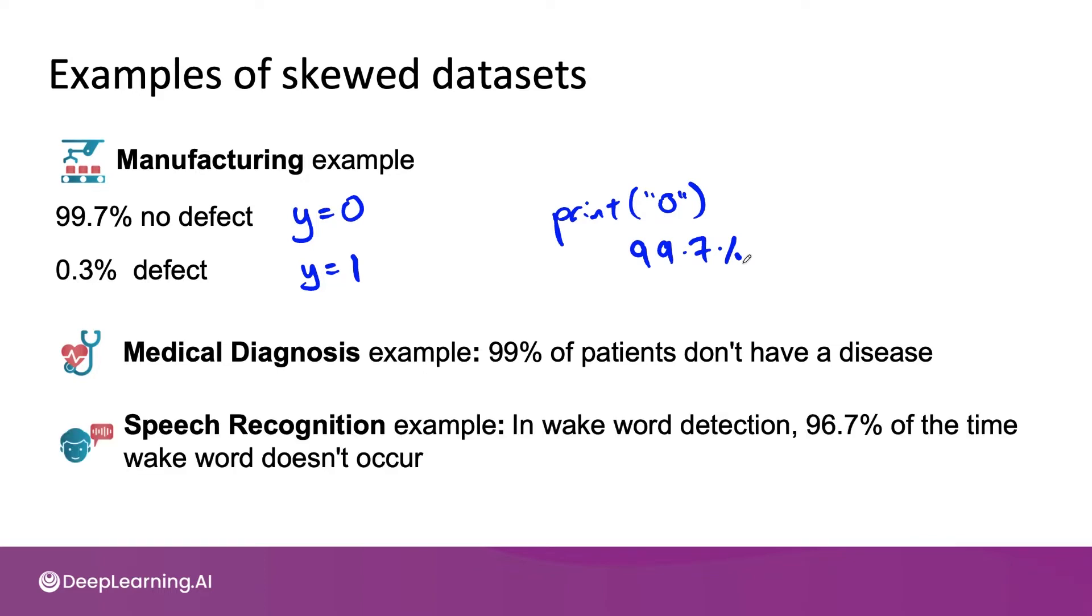Or speech recognition. If you're building a system for wake word detection, sometimes also called trigger word detection, these are systems that listen and see if you say a special word like Alexa or OK Google or Hey Siri. Most of the time that special wake word or trigger word is not being spoken, so when I had built wake word detection systems, the data sets were actually quite skewed. One of the data sets I use had 96.7 percent negative examples and 3.3 percent positive examples.